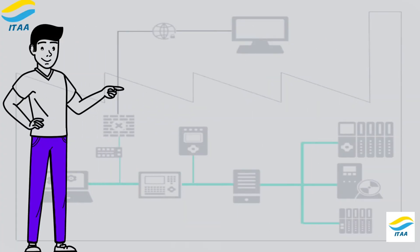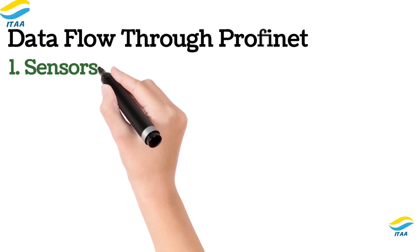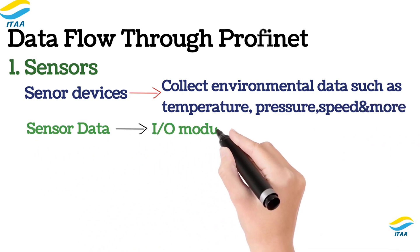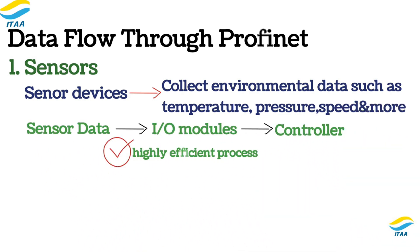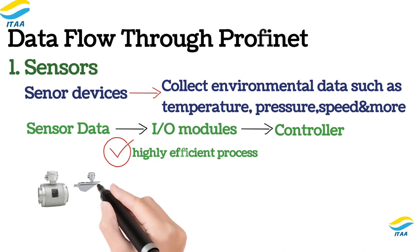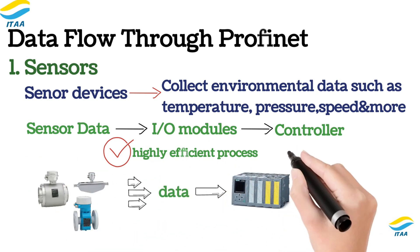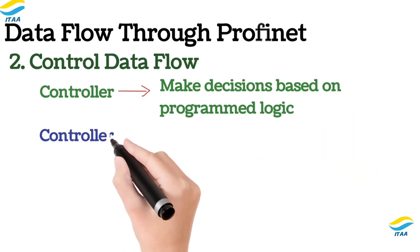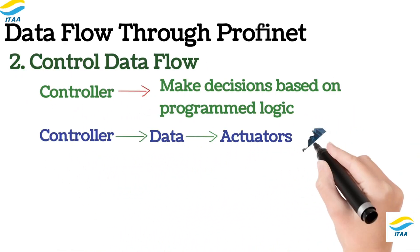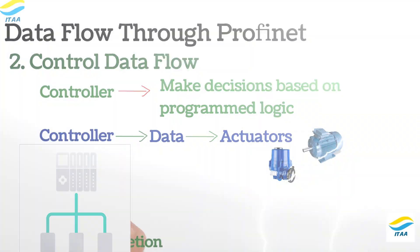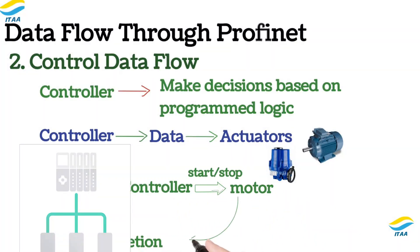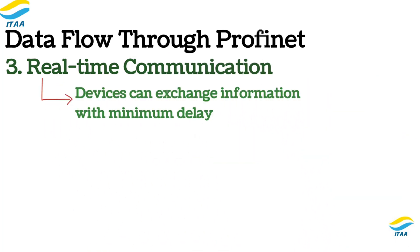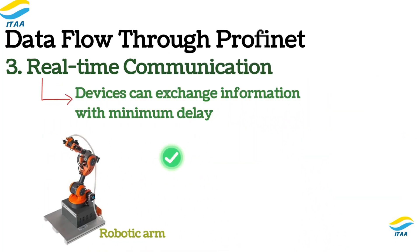Here is how data flows in a PROFINET network. Sensors collect live process data such as pressure, temperature, or position. This data is sent to the controller through I/O modules. The controller processes the data and applies control logic. Commands are sent to actuators to perform actions such as starting a motor or opening a valve. This process happens in real-time, often in cycles of just a few milliseconds. PROFINET ensures devices communicate with minimal delay, which is essential for robotics, motion control, and synchronized operations.